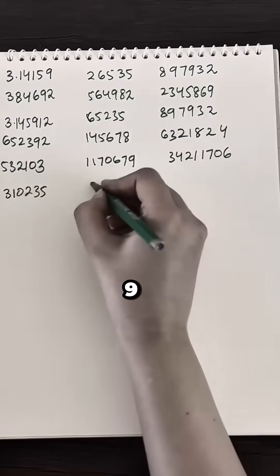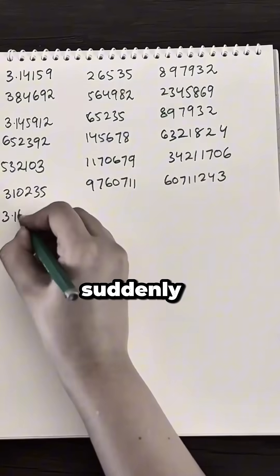Six nines in a row appear: nine, nine, nine, nine, nine, nine, like Pi suddenly glitched for a moment.